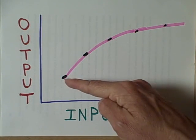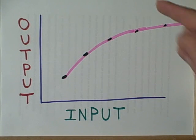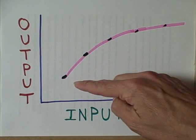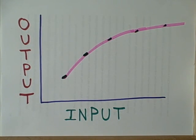In other words, we don't see a purely linear relationship between input and output. We see a kind of asymptotic relationship, a leveling off. This is the law of diminishing marginal returns.